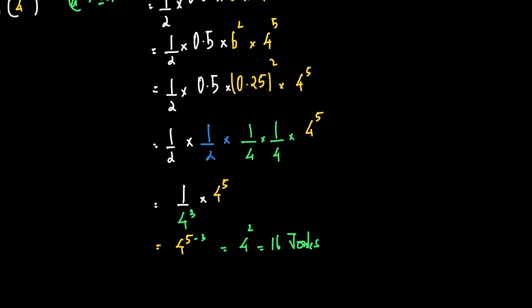To simplify this calculation, what is 0.25 in terms of fraction? It's 1/4. So 0.25 squared is 1/4 squared. What is 0.5? 1/2. So (1/2) times (1/4²) equals (1/4³) times 4⁵. 4⁵ divided by 4³ is 4^(5-3), which is 4². 16 joules.